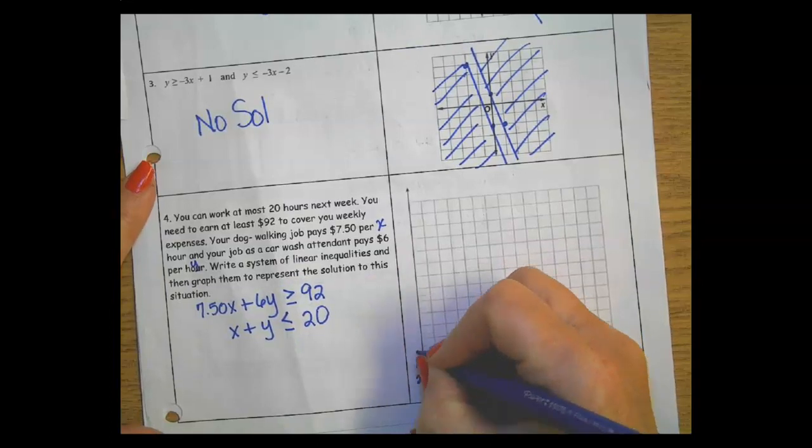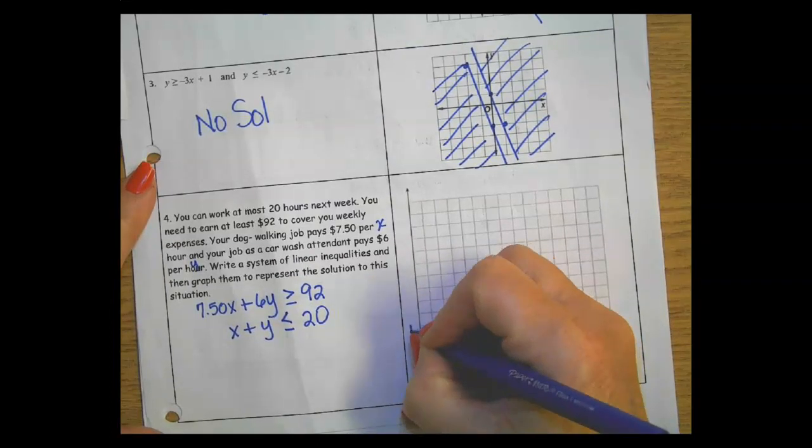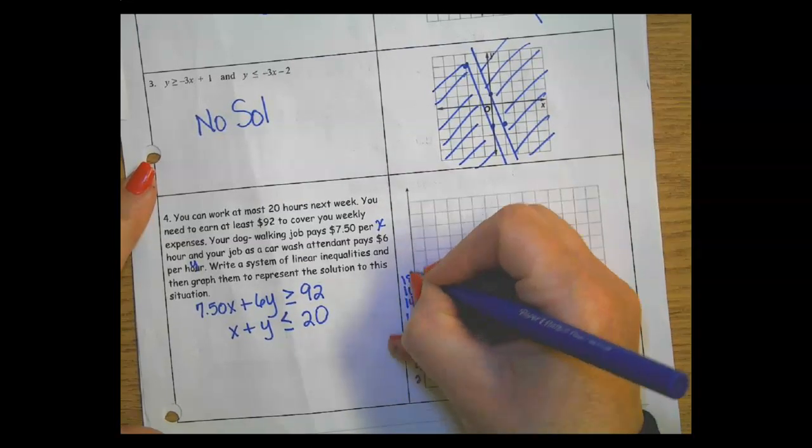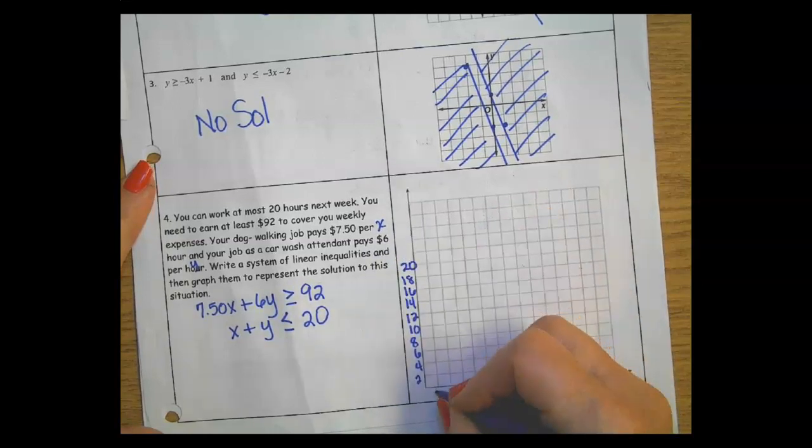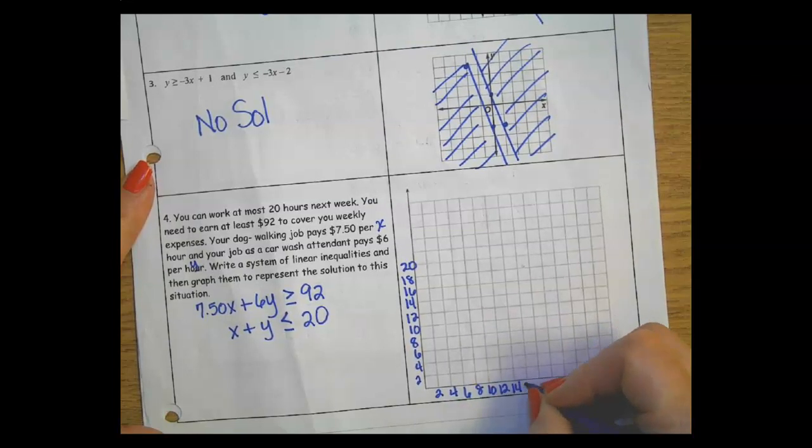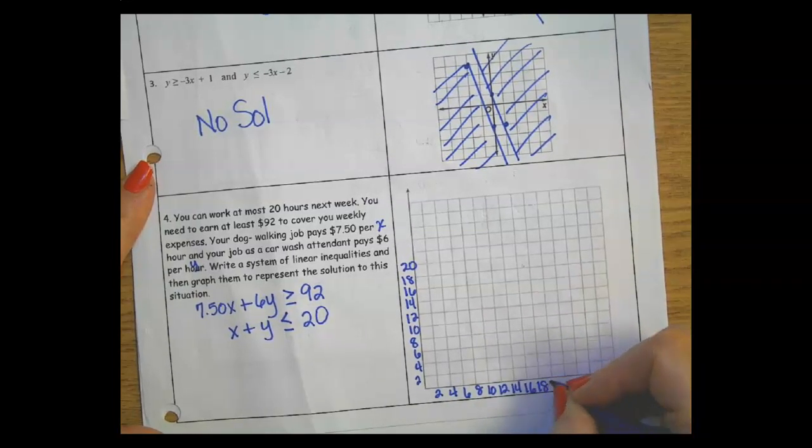So 2, 4, 6, 8, 10, 12, 14, 16, 18, 20. And I'm going to do the same here: 2, 4, 6, 8, 10, 12, 14, 16, 18, 20.